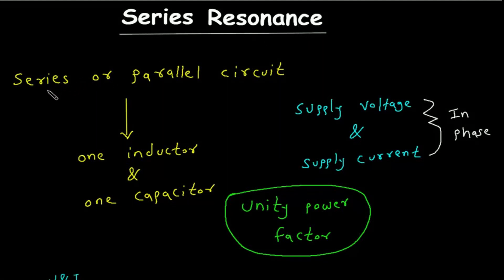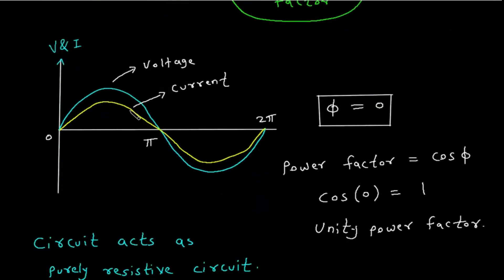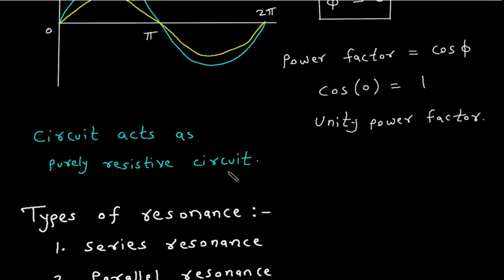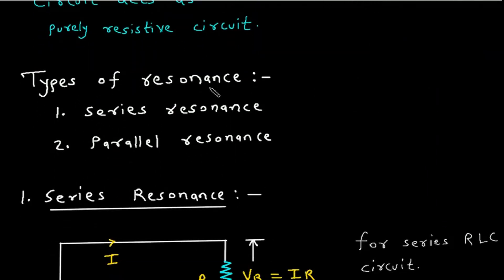Series Resonance. Resonance is a condition in a series or parallel circuit where at least one inductor and one capacitor is present, and the supply voltage and supply current are in phase, and the power factor is unity. The voltage and current are in phase, the phase angle is equal to 0, and therefore the power factor cos(0) equals 1 — that is, unity. So the circuit will act as a purely resistive circuit. There are two types of resonance: series resonance and parallel resonance.